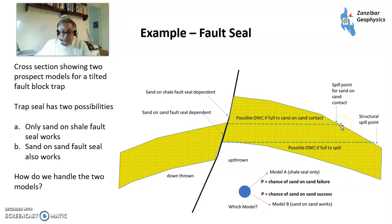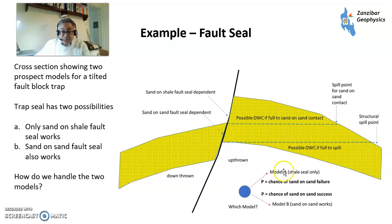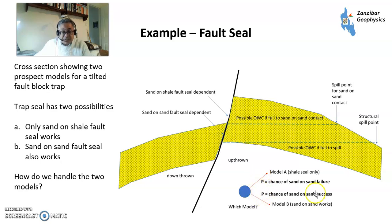There's a possible ODT to the sand on sand contact, or you've got a structural spill point where you're relying on sand on sand contact across the fault. That could work through cataclasis, shale gouge, etc. And you'll have a probability of this fault failing or a probability of this fault succeeding as a seal — you will have different probabilities.